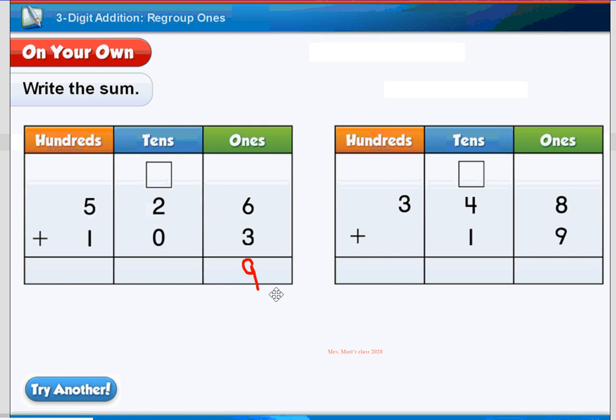Notice it's just 9, so we don't have to carry anything. There's nothing that's going to go into the tens place. So now, we're going to do 2 plus 0, and 2 plus 0 is going to give you 2. We're going to go over to our hundreds place, and 5 plus 1 is going to give us 6. And our sum is going to be 629.